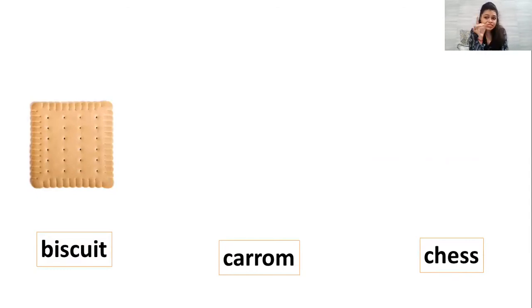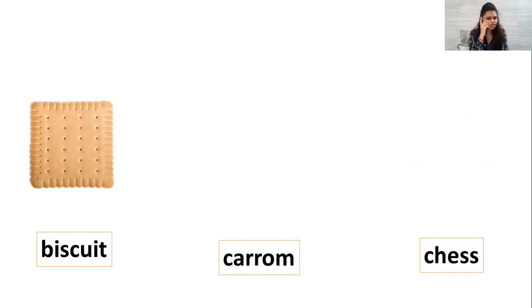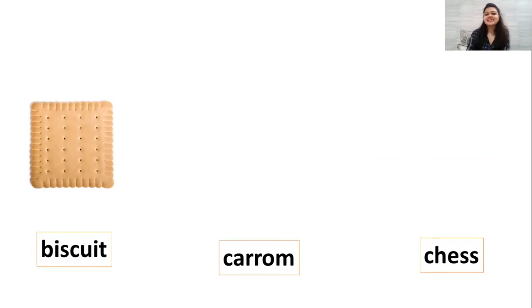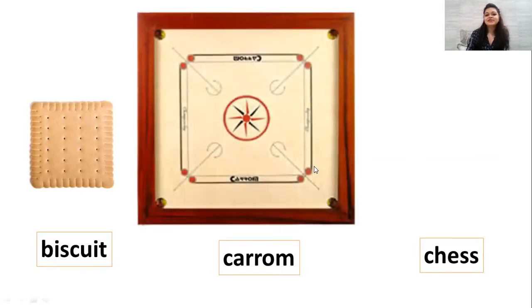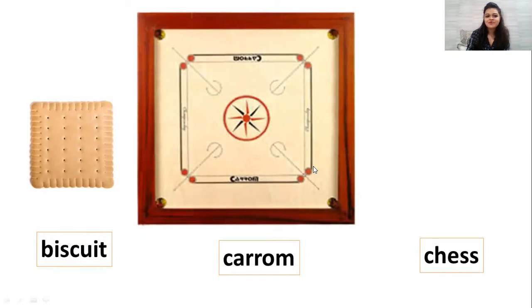What do we play like this? Yes, which game is it? It has a board. Yes, that's right. That's a carom board. Even carom board is of square shape.